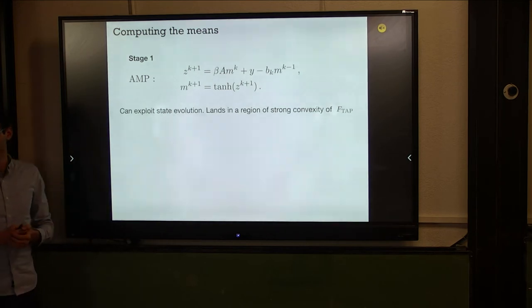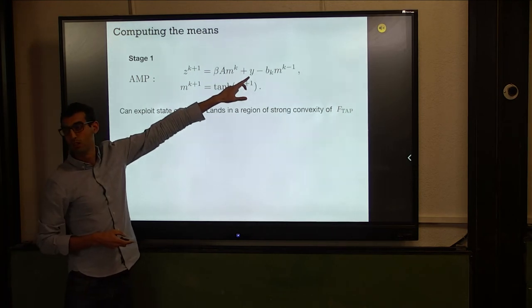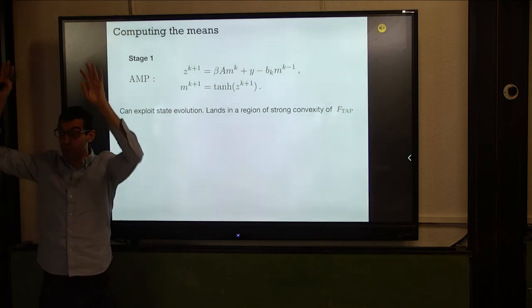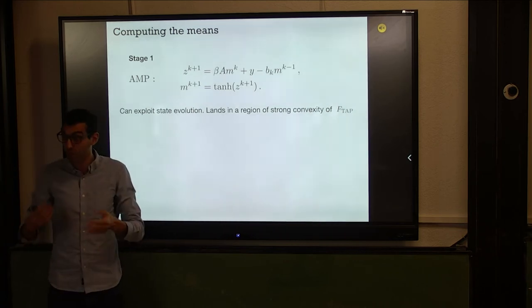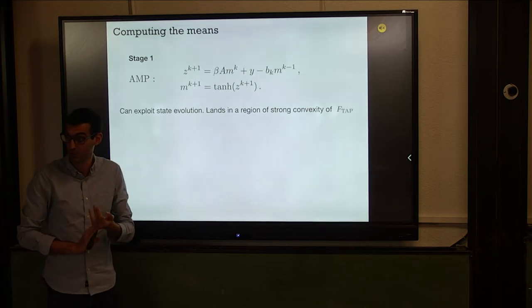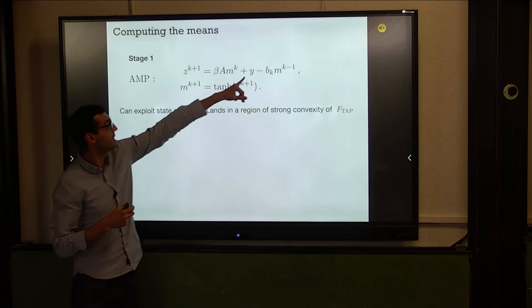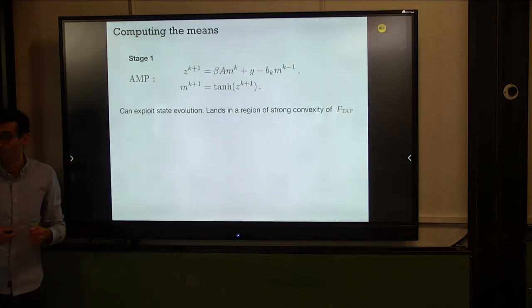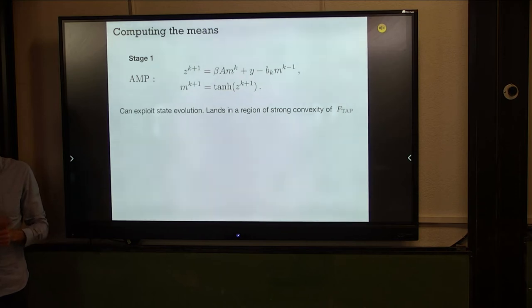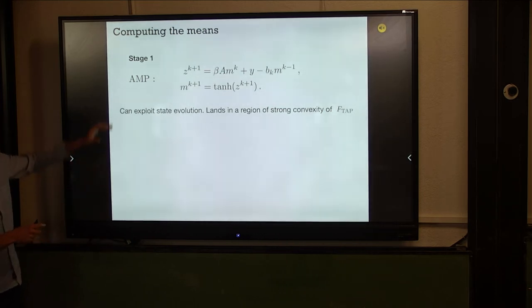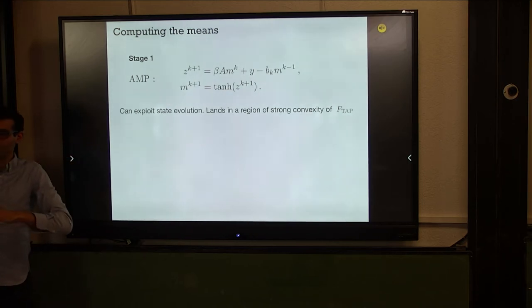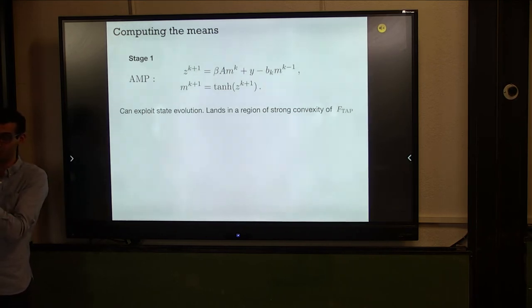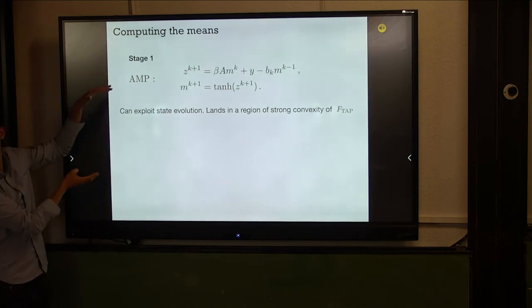The original measure has no external field, but stochastic localization introduces one at each step — there's a y_t to put into the AMP at every iteration. The algorithm has an external loop updating the field, and within each step, a sub-routine computing the mean vector. In the main algorithm, each step has one external field for the whole system — not uniform, coordinates are not the same — but it's one field.